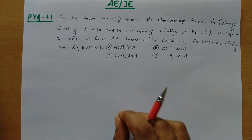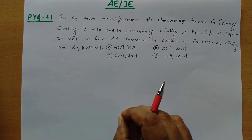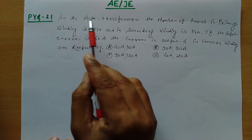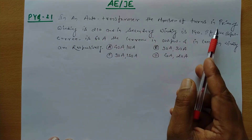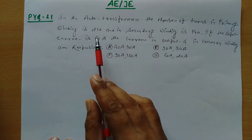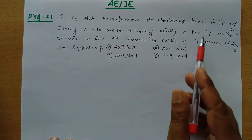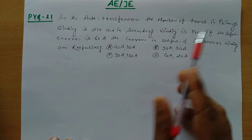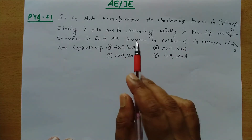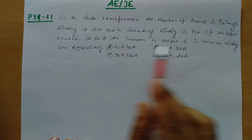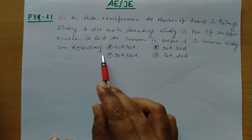Hello everyone. In today's video we will take PYQ number 21. In an auto transformer, the number of turns in the primary winding is 210 and in the secondary winding is 140. If the input current is 60 ampere, find the current in output and in common winding respectively.